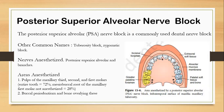The PSA nerve block — the posterior superior alveolar nerve block — is a very important and commonly used dental nerve block. Other common names include the tuberosity block and the zygomatic block. The nerves anesthetized are the posterior superior alveolar nerve and its branches. The areas anesthetized are important to learn by heart; as you start doing cases, you will understand them and they will come naturally.